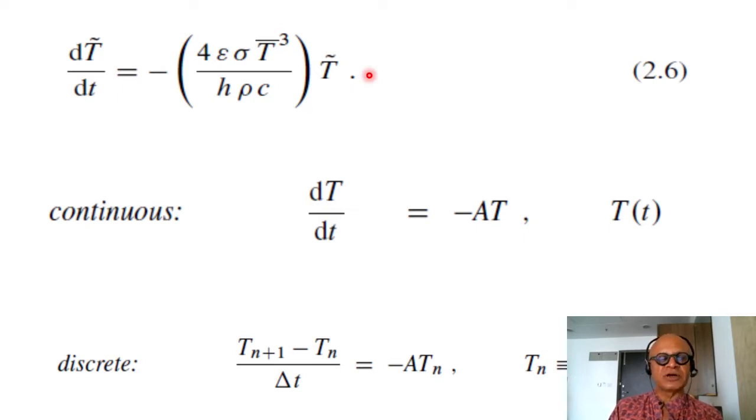We said this is a linear differential equation and we can write an exponential solution for it. And in the continuous form we can simplify this and write it as DT/DT equal to minus AT where we have dropped the tilde now and we know that it represents the deviation from the mean. So for simplicity this is the equation we are dealing with.